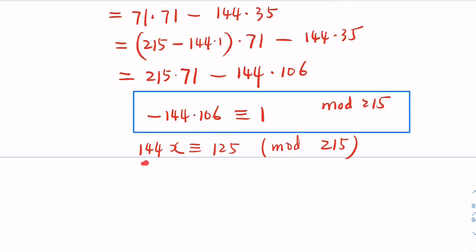So we would have negative 144 times 106 is congruent to 1. The equation we try to solve is this. So, you want to change this to 125. So, you multiply both sides by 125. That is, 144 times negative 106 times 125 would be congruent to 125 mod 215.